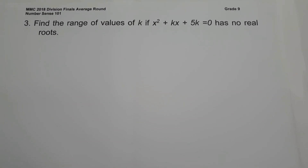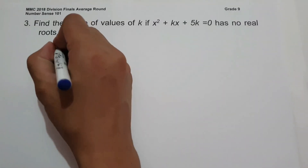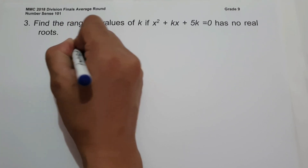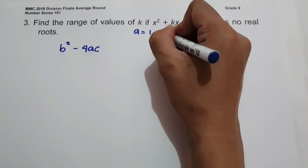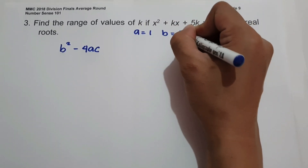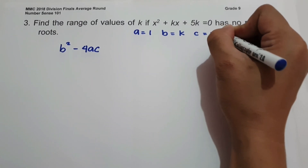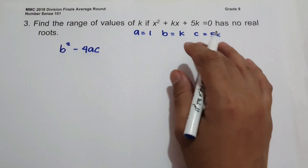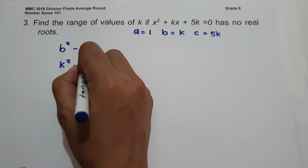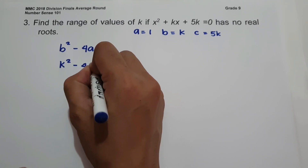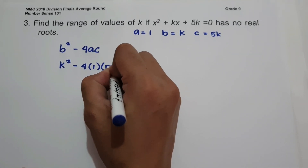On number 3, find the range of values of k if x squared plus kx plus 5k equals 0 has no real roots. To find the range of values of k, we use the discriminant, that is b squared minus 4ac, where a equals 1, b equals k, and c equals 5k. Substituting into the formula gives k squared minus 4 times 1 times 5k.